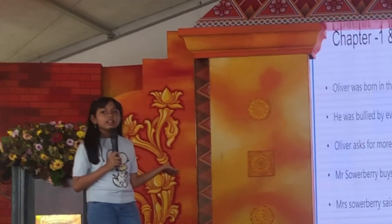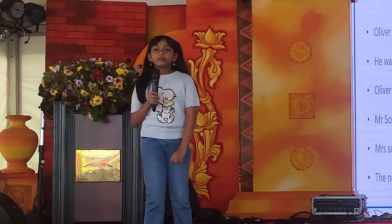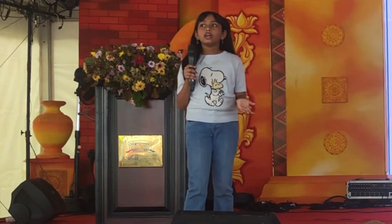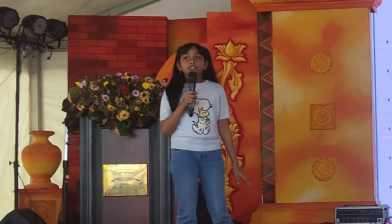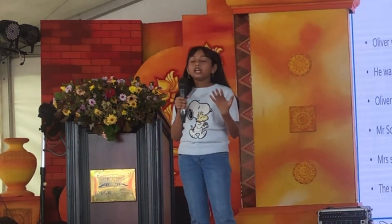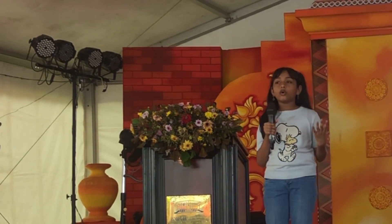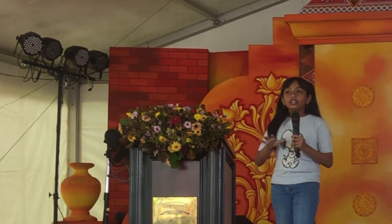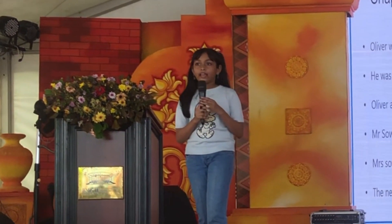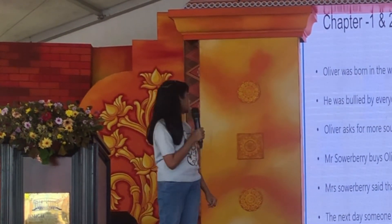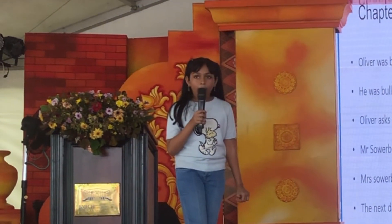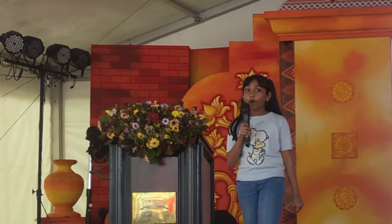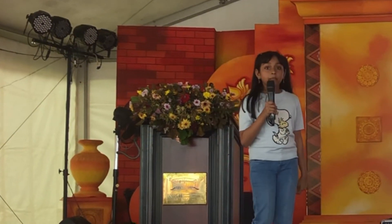Now let's move on to the story. In chapters 1 and 2, Oliver was born in the workhouse. He was an orphan since birth. After his mother gave birth to him, she died. Oliver spent his life in the workhouse and was bullied by everyone. One day, all of the boys set up Oliver to go and ask for more soup from the master. Oliver asked, 'Please, sir, can I have some more soup?' The master hit him with the spoon, and Mr. Bumble locked him in a dark room for one week. Every morning, he would take him out and beat him in front of all the boys.